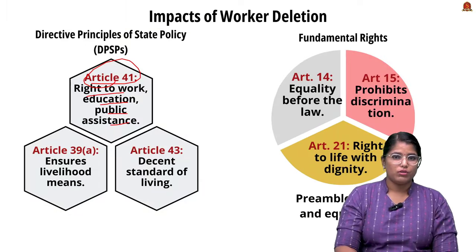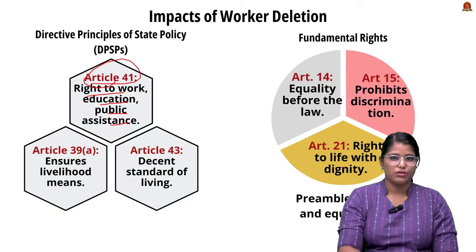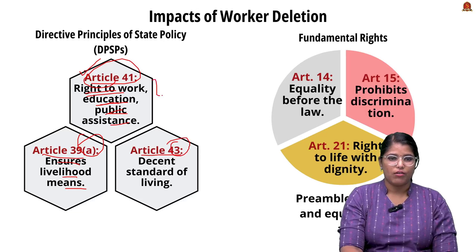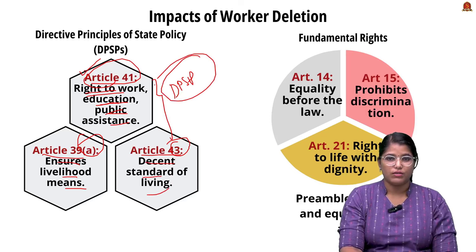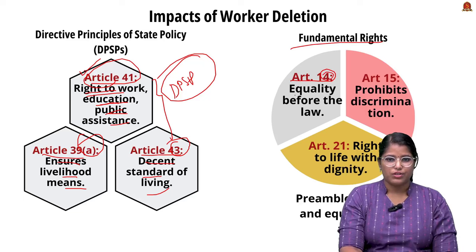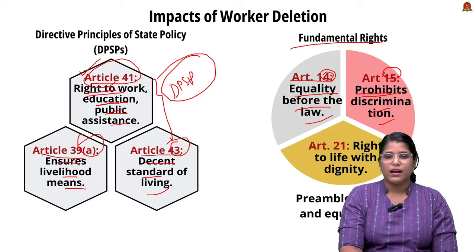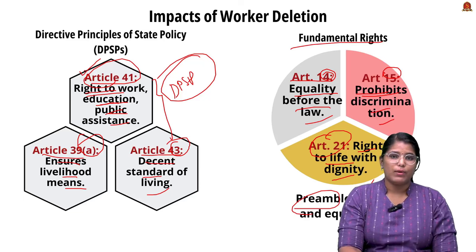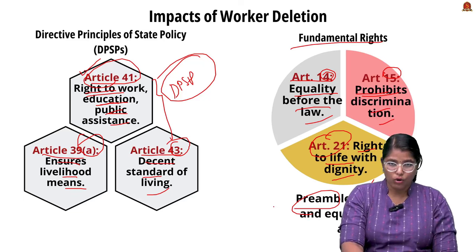Constitutional provisions linked to the scheme include Article 41 (right to work, education, and public assistance), Article 39A (ensuring livelihood means), and Article 43 (decent standard of living) — all three are DPSPs. Regarding fundamental rights, Article 14 ensures equality before law, Article 15 covers prohibition of discrimination, and Article 21 covers the right to life with dignity. The Preamble also upholds justice and equality for all as core principles.